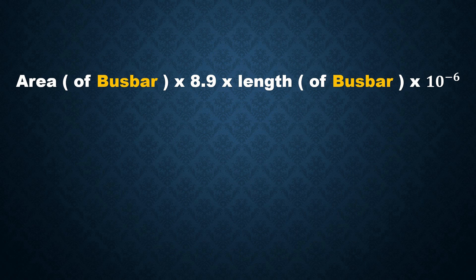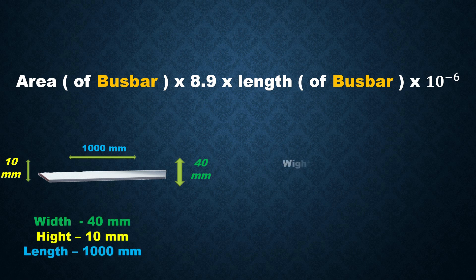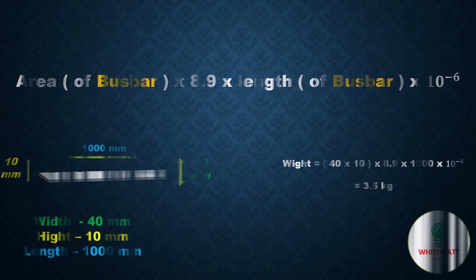For better understanding, let's take an example. We have an aluminium bus bar whose width is 40 mm, height is 10 mm, and length is 1000 mm. Now put these values in the formula: 40 multiplied by 10 multiplied by 8.9 multiplied by 1000 multiplied by 10 to the power of negative 6. The answer is equal to 3.5 kg.